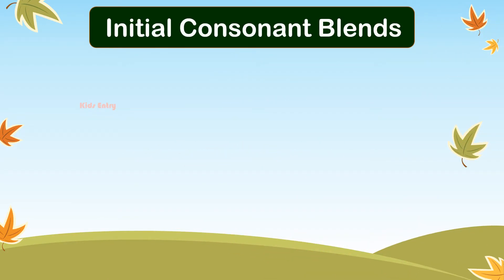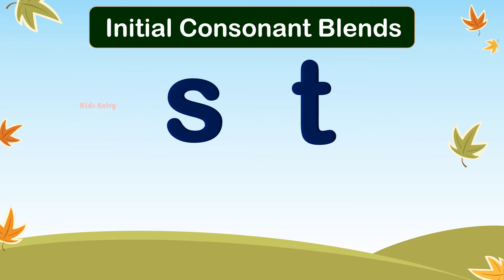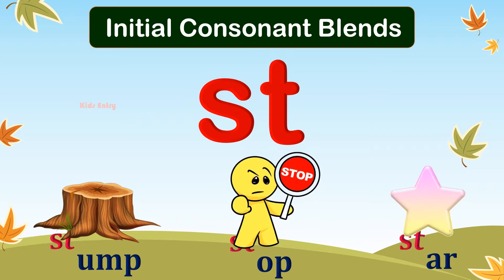Initial Consonant Blends. Letter S makes the sound S, and Letter T makes the sound T. These two letters join together and make the sound ST. Let's see some words that begin with ST.